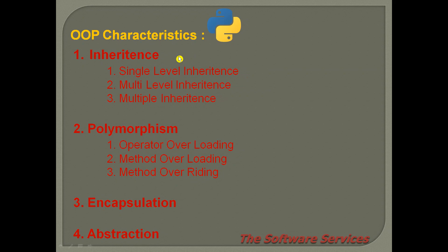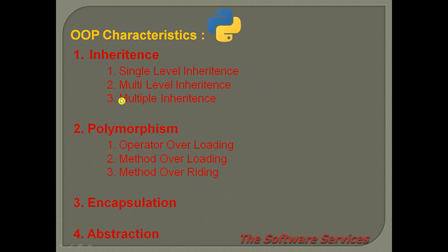Inheritance means sharing methods and attributes from one class to another, so we can reuse the same code. Inheritance includes single-level inheritance and multi-level inheritance. Multiple inheritance means inheriting from many classes.